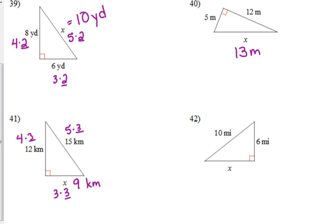Problem 32 is almost just like 39, except we have a leg of 6 and a hypotenuse of 10. That means the other leg is 8 miles.